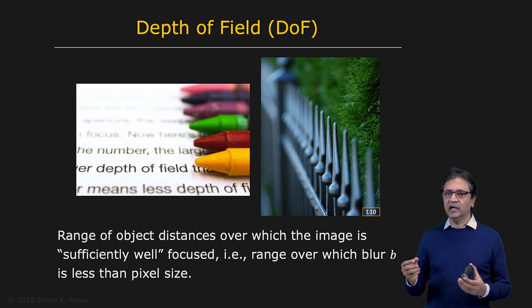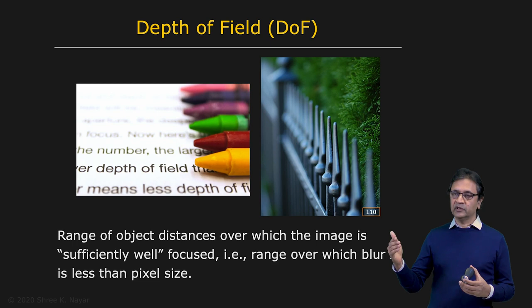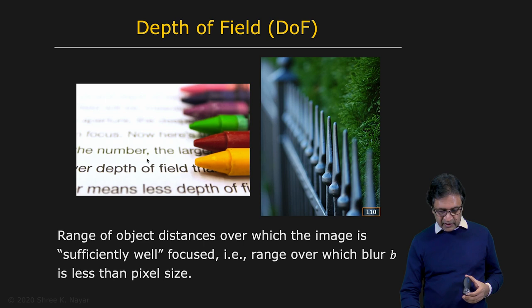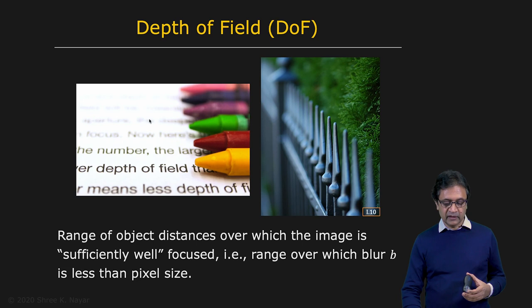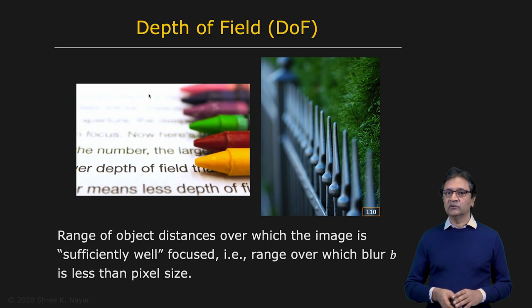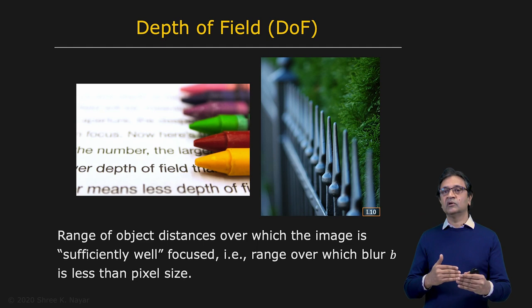As long as the blur circle happens to be smaller in diameter than the size of a pixel, all points are going to be equally focused. That's why there's a range of depths that are equally in focus, and points further away from that region are going to get progressively out of focus. The range of object distances for which the blur B is less than a pixel size is called the depth of field of the imaging system.